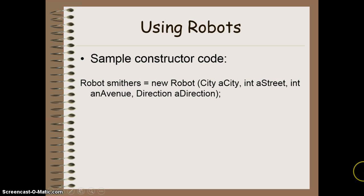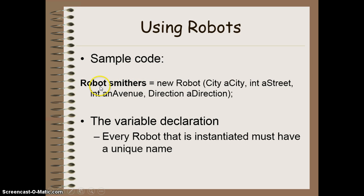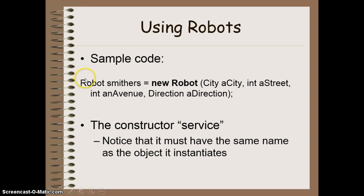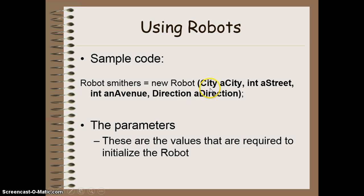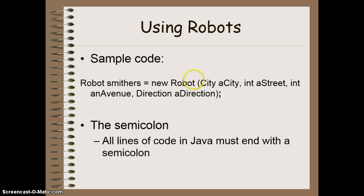Here's a constructor for a robot. The first section is the variable declaration — just like int age or String name, this identifies the type, which in this case is Robot, and the name, which I'm going to call Smithers. This name can be anything as long as it's unique in that scope. You then say this Smithers robot is going to equal a new Robot. This part of the code accesses the constructor service — it goes into the robot class and looks for the code to make a new robot. The name here has to correlate to the name of the object itself. That's followed by all of the parameters required: a city, an integer value, a second integer value, and a direction. Those would be the arguments you provide to match the parameters. Every line of code in Java ends with a semicolon.